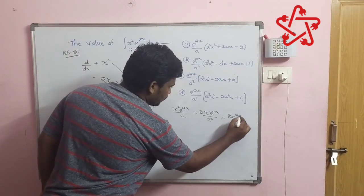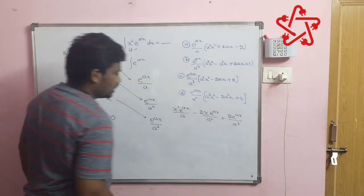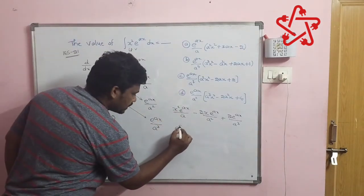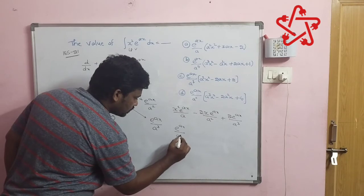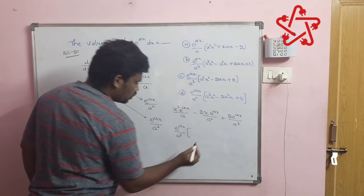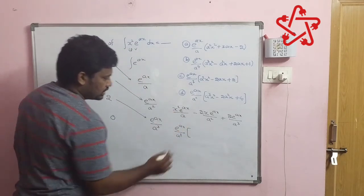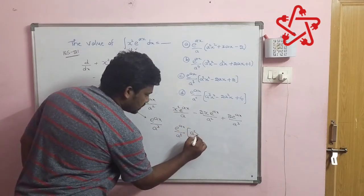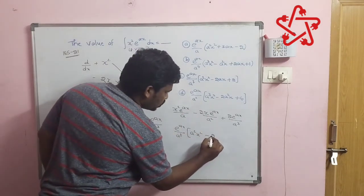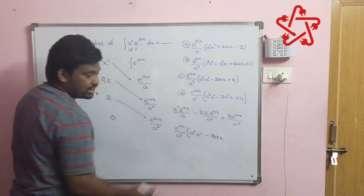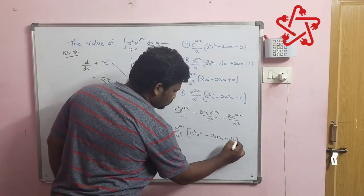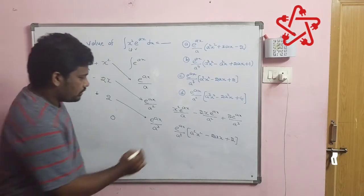What to draw common? We can draw common as e power ax by a cube. If I draw a cube as common, then we will be getting a square into x square, minus 2ax, plus 2. This is the final value of this integral.